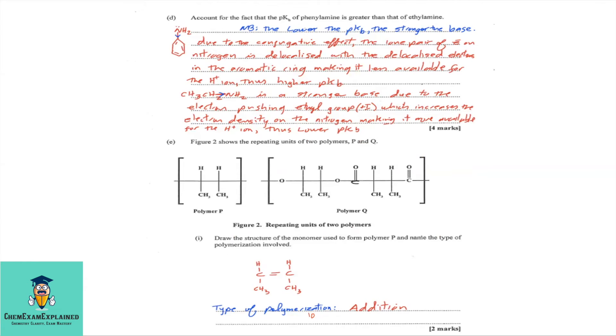Part D. Account for the fact that the pKb of phenylamine is greater than that of ethylamine. Now, we just looked at pKa and Ka. Now, you must note that the lower the pKb, the stronger the base. Now, look at the diagram here. Within this structure, you'll see that we have the two electrons on the nitrogen. These electrons will be delocalized into the ring. So, due to the conjugative effect, the lone pair of electron on nitrogen is delocalized with the delocalized electrons in the aromatic ring, making it less available for the H plus ion, thus higher pKb.